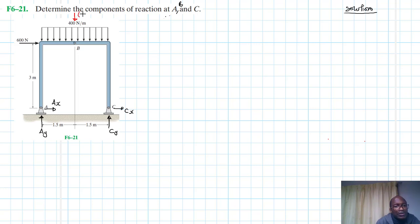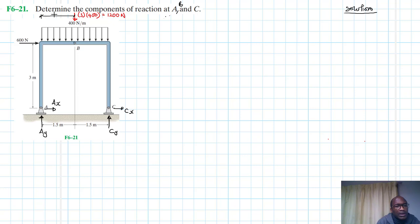The equivalent force equals the area under the load diagram. The length is 3 meters, times the intensity of 400 N/m, giving us an equivalent force of 1200 newtons. This force acts at the midspan, so the position is at 1.5 meters from the end.